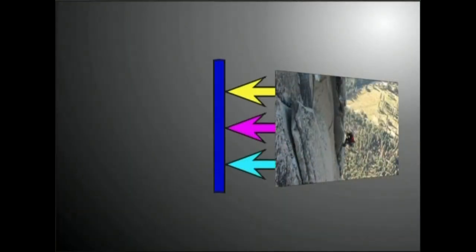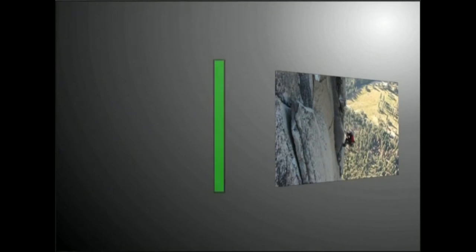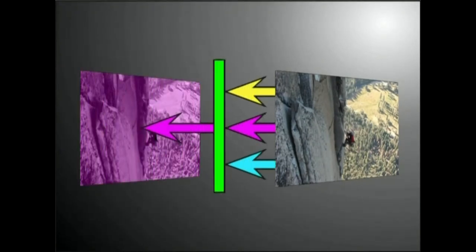Argi iragazki urdinarekin, horiaren negatibaren irudia lortuko dugu, argi iragazki urdinak magenta eta zian izpiei bidea galerazten baitie. Argi iragazki berdearekin, magentaren negatibaren irudia lortuko dugu, argi iragazki berdeak izpi hori eta zianei bidea galerazten baitie.